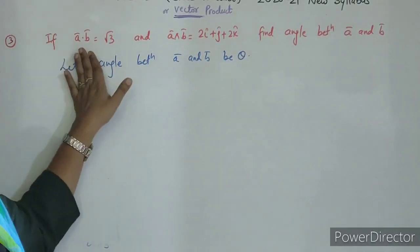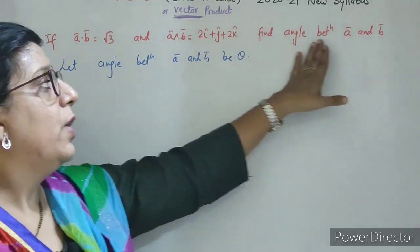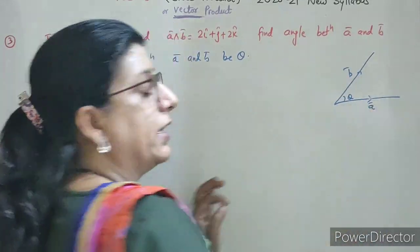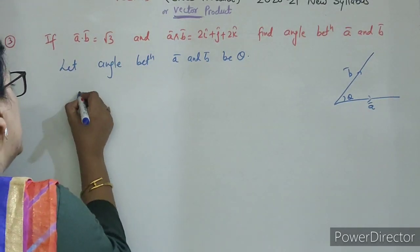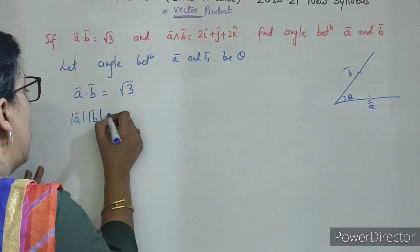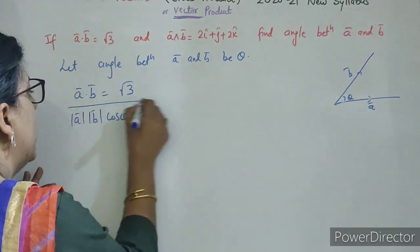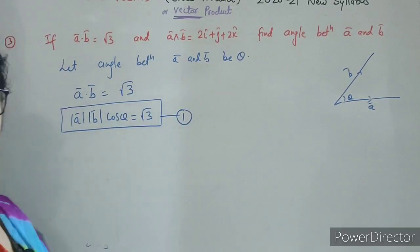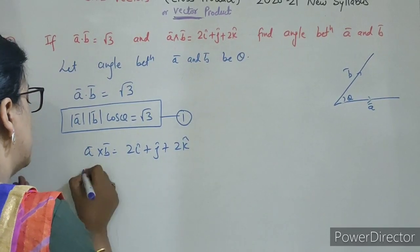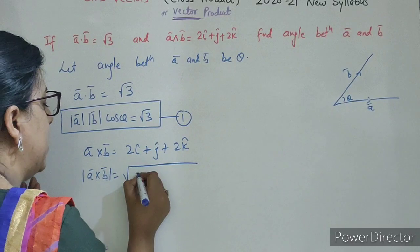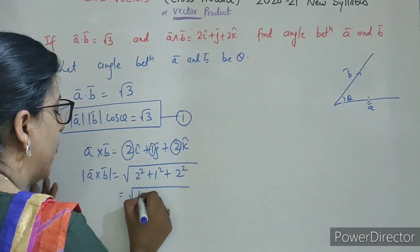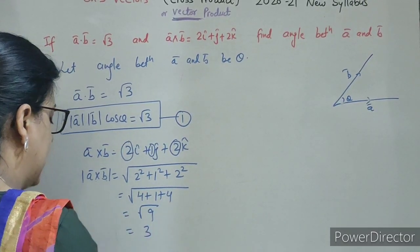Students, start karte hain third question: if A dot B is root 3 and A cross B is also given (= 2î + ĵ + 2k̂), we have to find out angle between two vectors A and B. Let theta be the angle. What is given: A dot B = mod A, mod B, cos theta — mark this as equation 1. What is magnitude of A cross B? Root of (2² + 1² + 2²) = root of (4 + 1 + 4) = root 9 = 3.